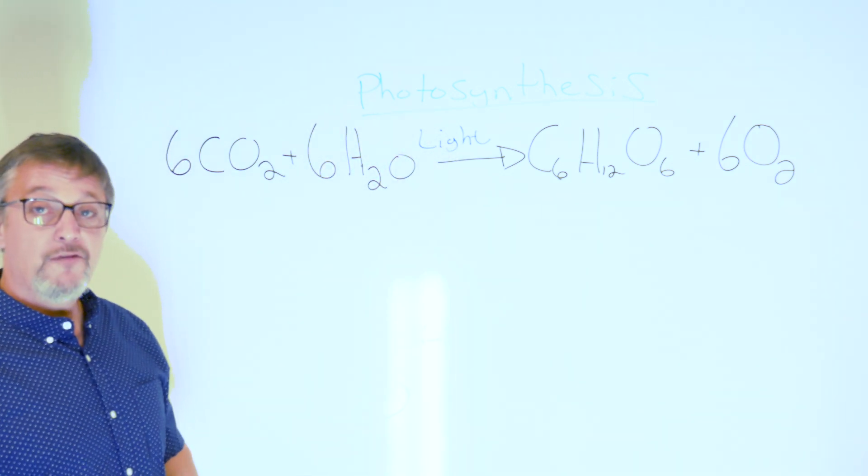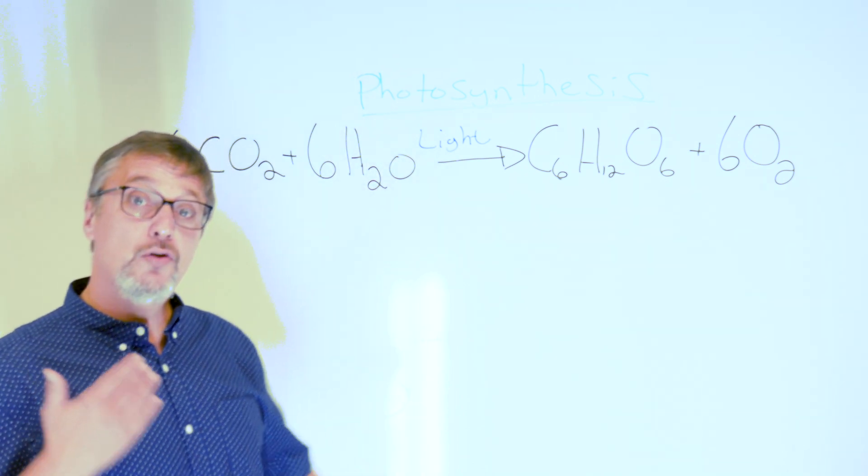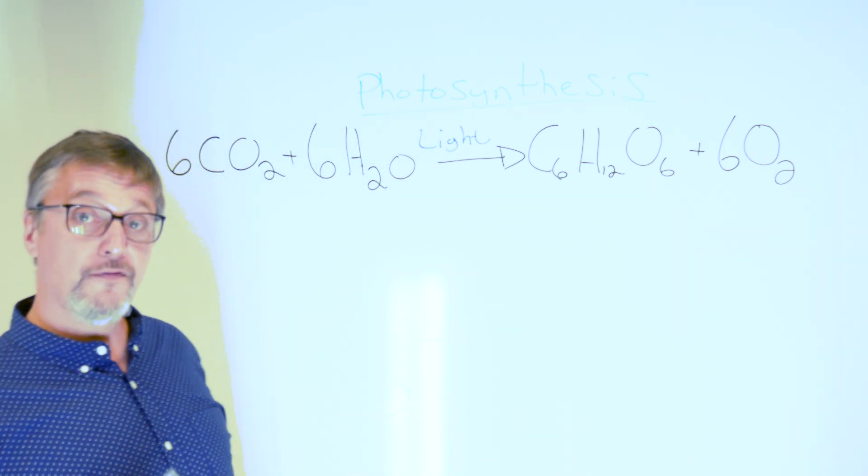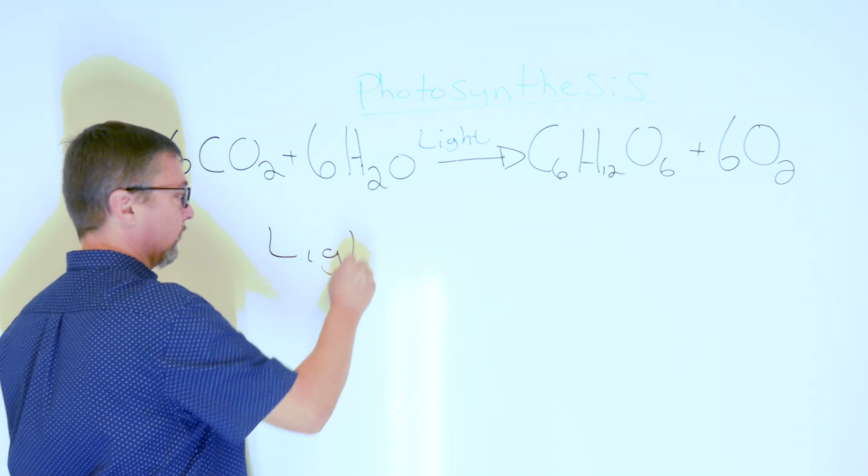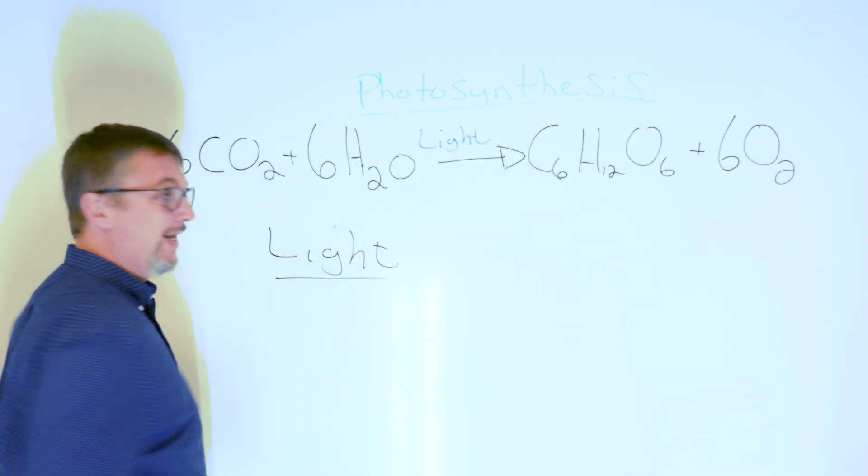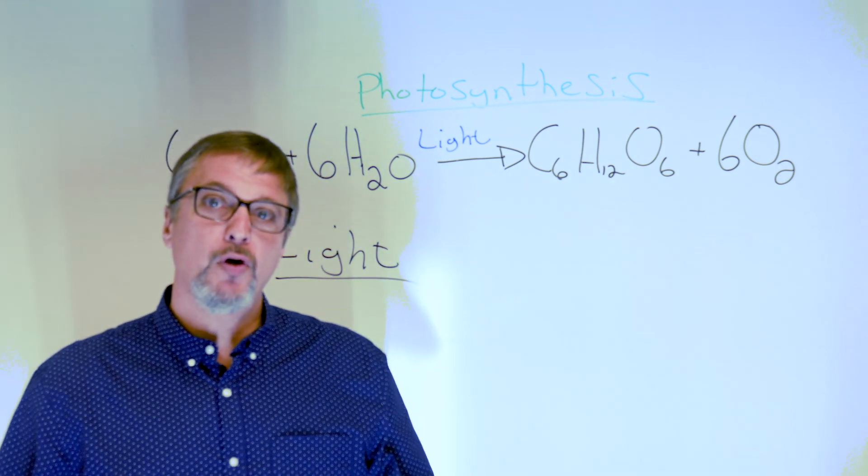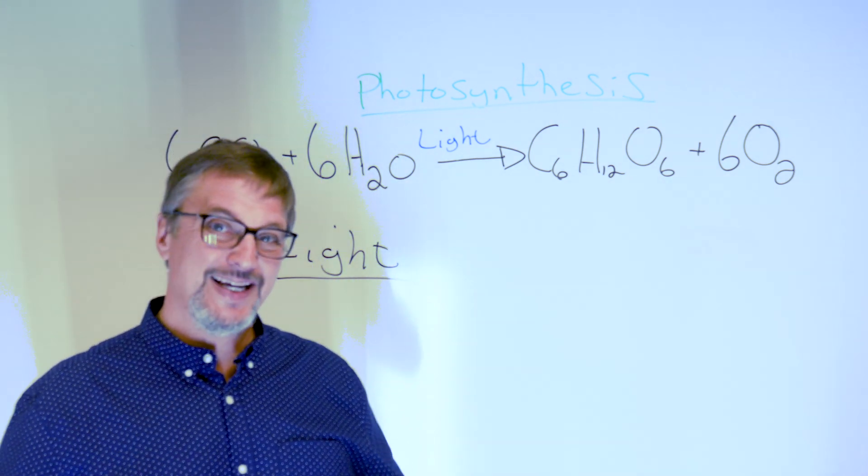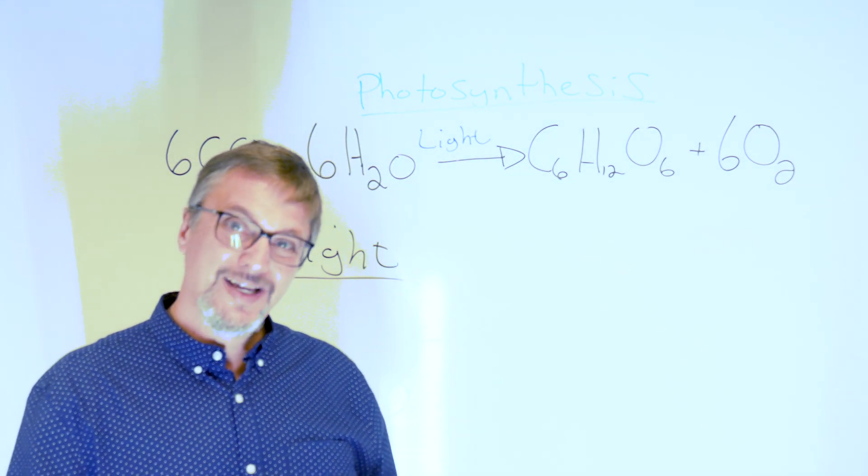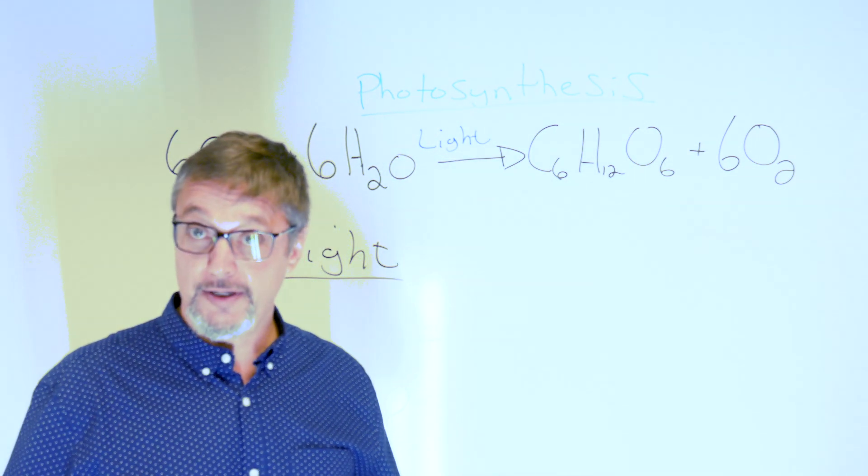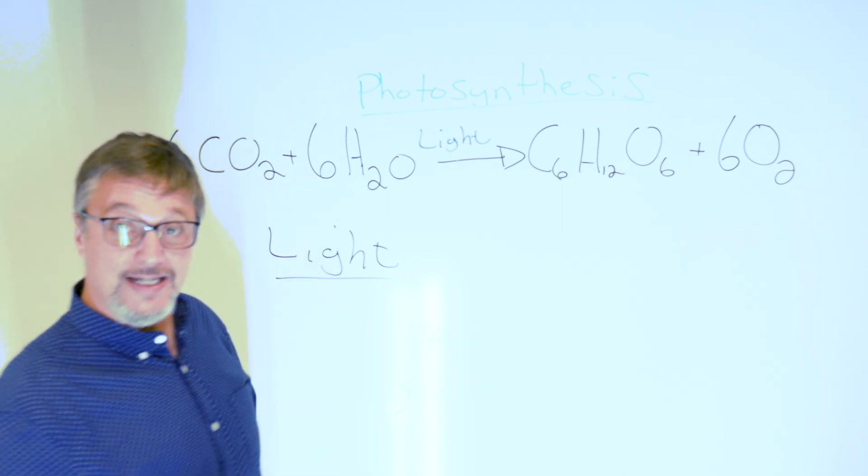Photosynthesis has a two-step metabolic pathway. The first step is called the light reaction. In the light reaction, there are proteins inside the chloroplast that get energized with light energy, and this allows them to split the water molecule and create chemical energy. They're going to make the molecules ATP and NADPH, which is chemical energy.